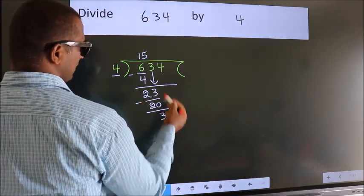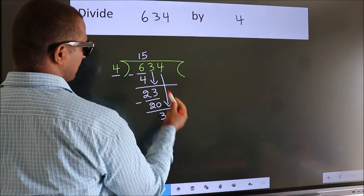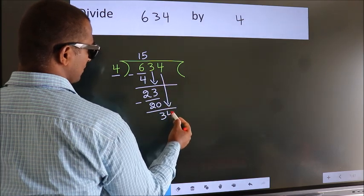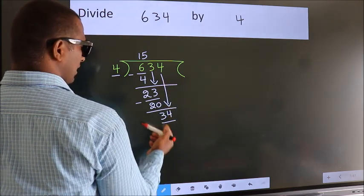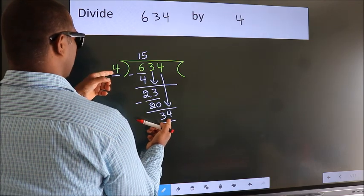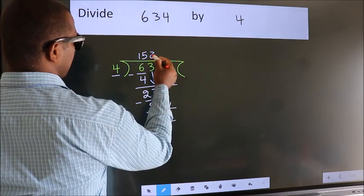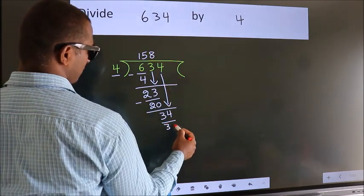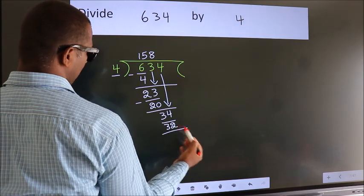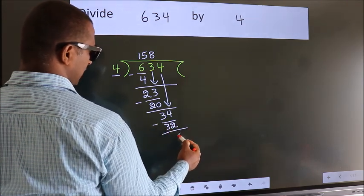After this, bring down the beside number, so 4 down. So 34. A number close to 34 in the 4 table is 4 eights, which is 32. Now we subtract. We get 2.